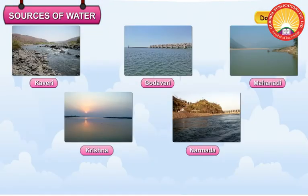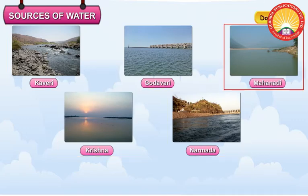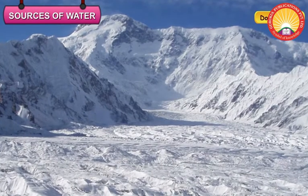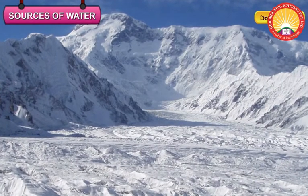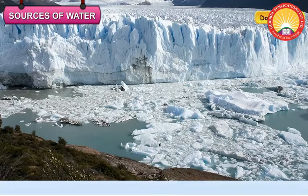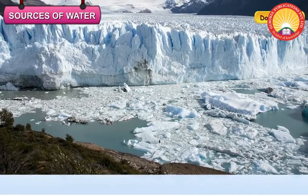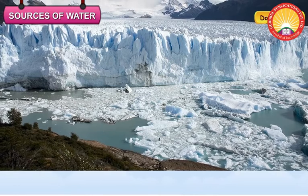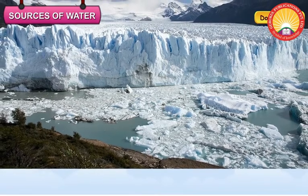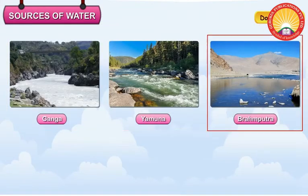Some rain-fed rivers are Kaveri, Godavari, Krishna, Narmada, and Mahanadi. When snow or ice melts in high mountains, it flows down into rivers. Such rivers are called snow-fed rivers or perennial rivers. Some snow-fed rivers are Ganga, Yamuna, and Brahmaputra.